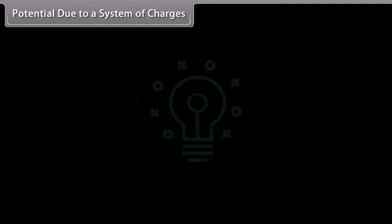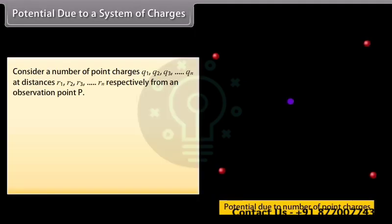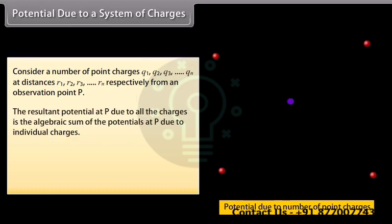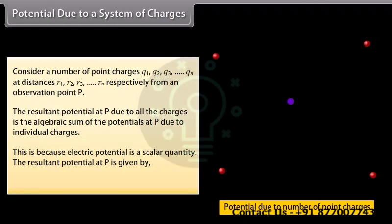Potential due to a system of charges: Consider point charges Q1, Q2, Q3, ... Qn at distances R1, R2, R3, ... Rn respectively from a point of observation P. The resultant potential at P due to all charges is the algebraic sum of the potentials due to individual charges, since electric potential is a scalar quantity. The resultant potential at P is given by V = V1 + V2 + V3 + ... + Vn.